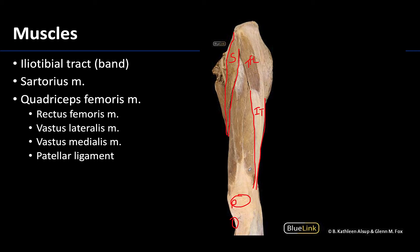All of these muscles share a common distal quadriceps tendon, wherein the patella, or kneecap, will form. From the patella to the tibial tuberosity you have what is called the patellar ligament, which is really just an extension of that quadriceps femoris tendon. Since it goes from bone to bone - from the patella to the tibial tuberosity - it often has a different name. More superiorly it's called the quadriceps tendon; more distally it's called the patellar ligament, but they're really composed of the same thing.